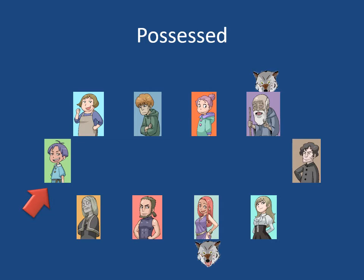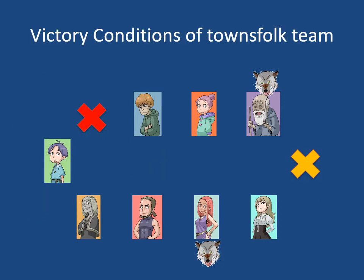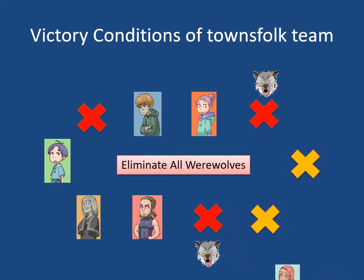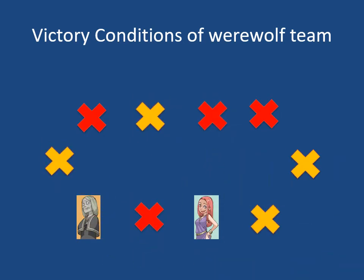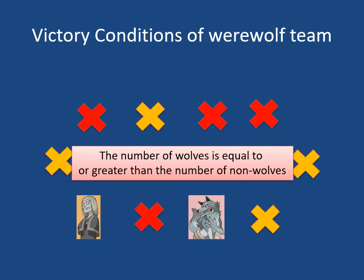The Possessed will help the werewolf by falsely claiming to be the Seer or perhaps executing different ones. Importantly, the Possessed does not know who the wolf is, and the wolf also does not know who the Possessed is. The victory condition of the townfolk team is that all werewolves are eliminated. The werewolf wins when the number of werewolves is equal to or greater than the number of non-werewolves remaining. That is the winning condition.